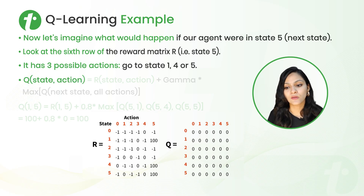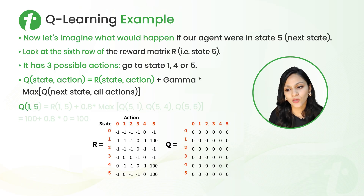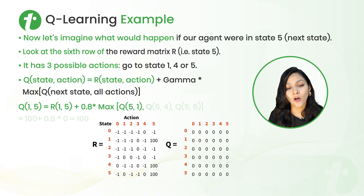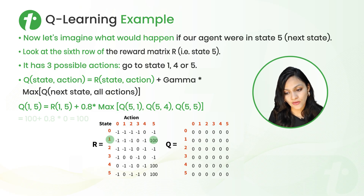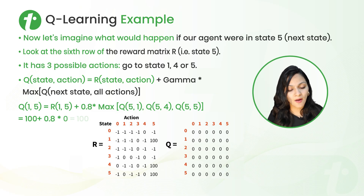Using the updated Q-learning rule derived from Bellman's equation: Q(state, action) = R(state, action) + gamma × max Q(next state, all possible actions). We calculate Q(1, 5) = R(1, 5) + 0.8 × max of Q-values for the next state. The reward R(1, 5) is 100, and since all Q-values are currently zero, max is zero. So Q(1, 5) = 100 + 0.8 × 0 = 100. We update this value in the Q-value table.